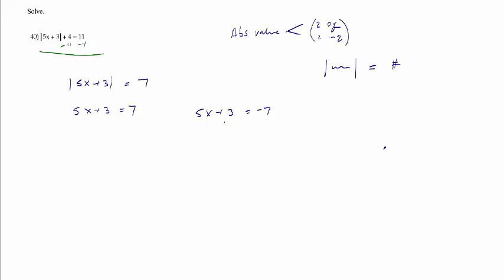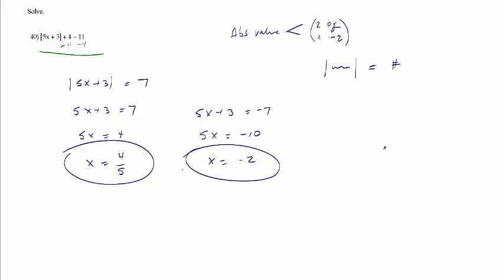Now we get to solve these two equations. Both of these are simple linear equations. You can skip a few steps — subtract 3 from both sides, so you have 5x equals 4. Dividing by the 5, x is equal to 4 fifths. For the other equation, we pretty much do the same two steps. Subtracting 3 from both sides, we'll have 5x equals negative 10. Dividing by the 5, x equals negative 2. So remember absolute value — immediately think I need to separate it, and make sure that you isolate the absolute value before you separate them.